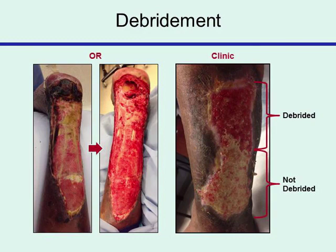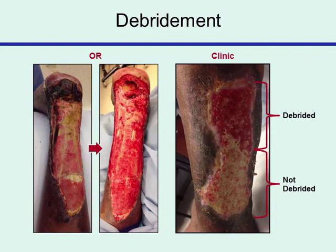Examples of operating room debridement show an extremity with gangrene, significant tissue loss involving the posterior aspect of the leg extending down into bone, and aggressive surgical debridement involving removal of wound margins, deep tissue necrosis, and sometimes a portion of the bony anatomy. In contrast, clinic debridement shows the difference between the recently debrided wound portion and the non-debrided portion, highlighting how important it is to remove fibrous necrotic tissue to allow granular tissue to do its job in wound healing.